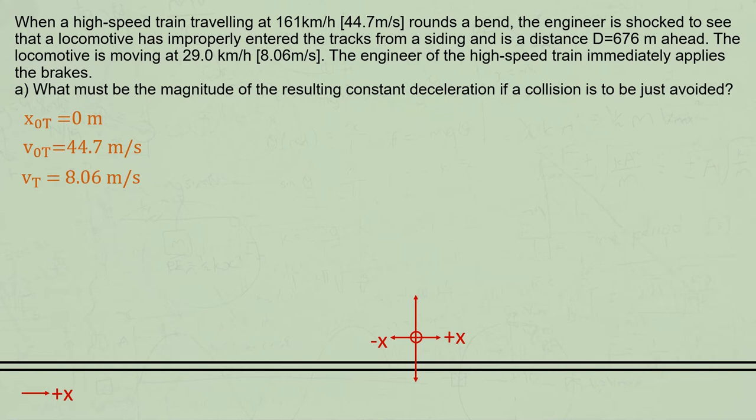Many students assume that the final velocity of the train must be zero, but it only needs to slow down to the same velocity as the locomotive, because it's decelerating, so after that time it will be traveling slower than the locomotive and thus unable to collide with it.